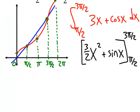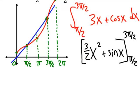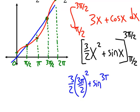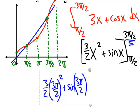So let's scroll down a little bit. I'll plug in the b value first, the 3 pi over 2. And we'll get 3 halves, 3 pi over 2 squared, plus sine of 3 pi over 2. And again, that's the b value. So let me go ahead and color code this. Move this over.